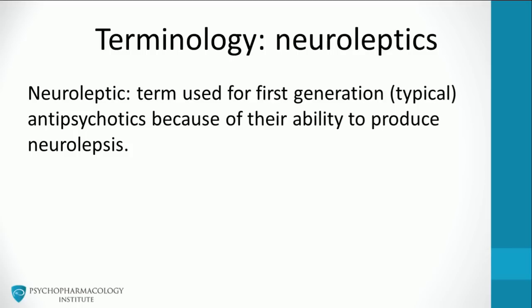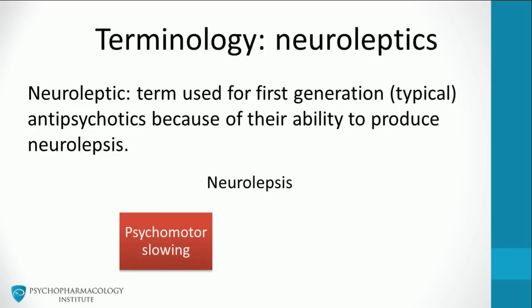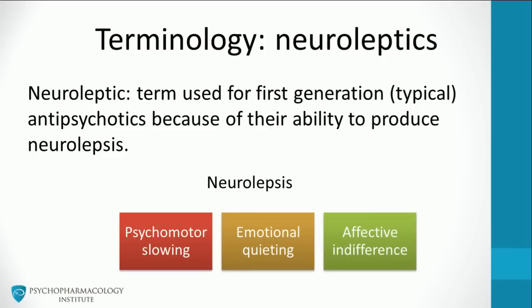What is neurolepsis? Clinicians in the 50s described a syndrome which has three main features: psychomotor slowing, emotional quieting, and affective indifference. Clinicians at the time thought this syndrome was a reliable sign of antipsychotic efficacy, but nowadays it is clear that these effects are not required for drugs to have therapeutic action, and that the presence of these symptoms predicts low treatment adherence.